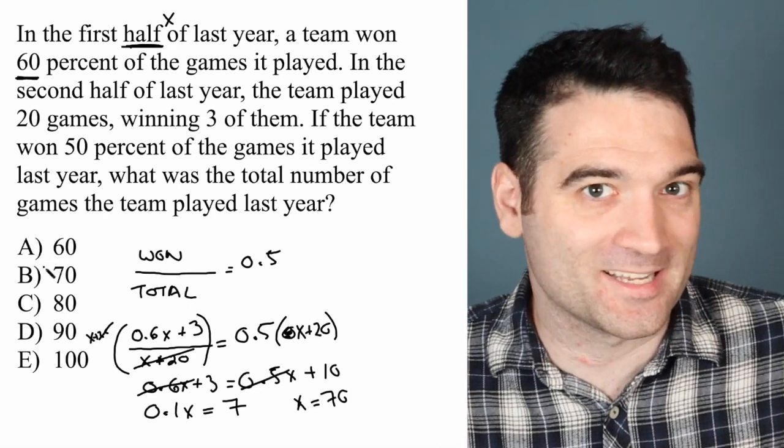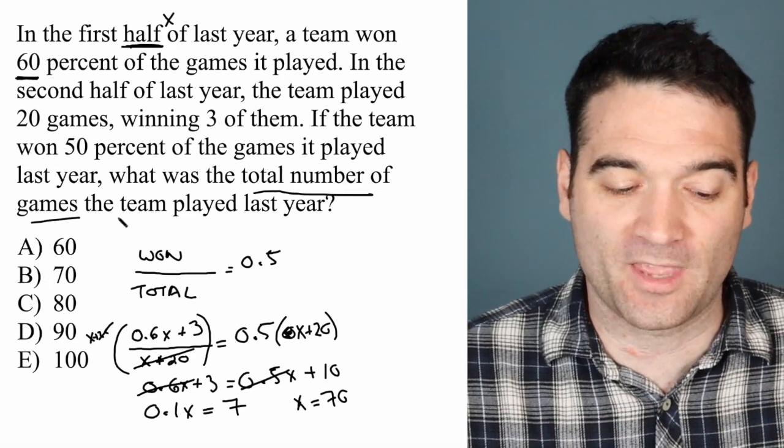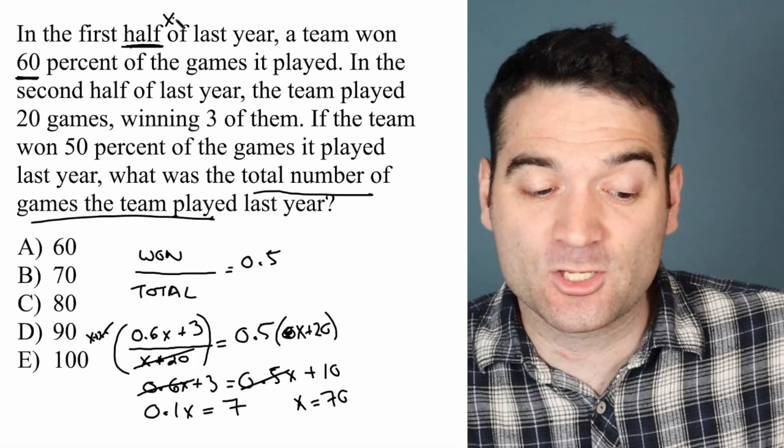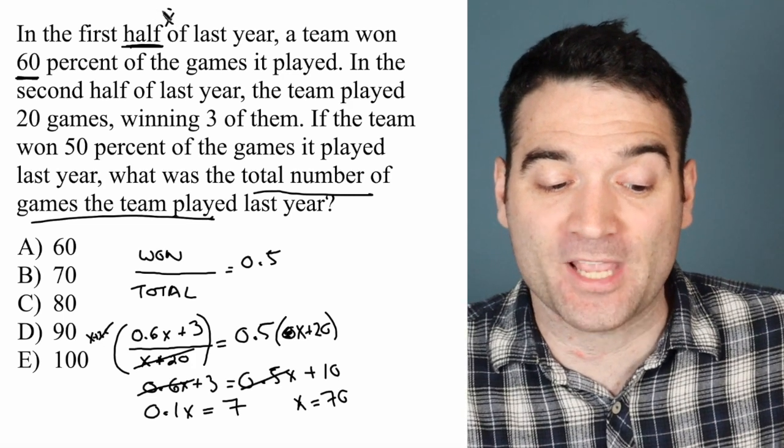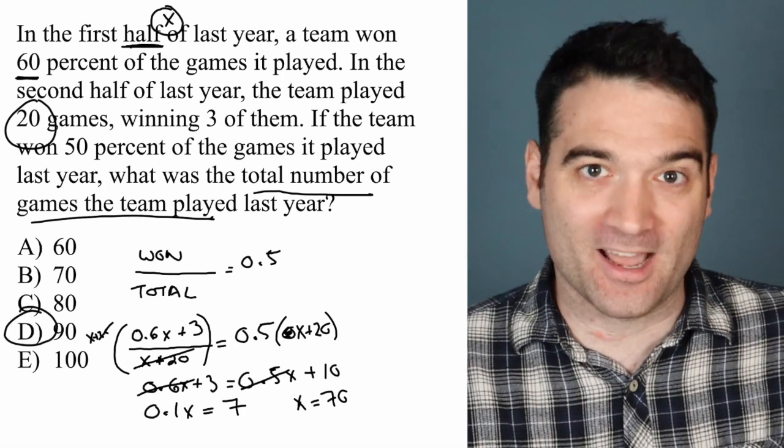Now, 70 is an answer option, but careful. It's not the correct answer option. Because the question is, what was the total number of games played last year? X represents the number that we played in the first half of the year. And then we played 20 games in the second half for a total of 90.